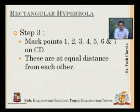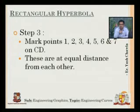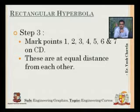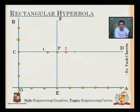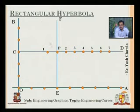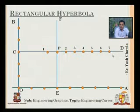Next, step three: I'll mark seven points on CD, the horizontal line passing through point (3,3). I've taken one point on the left-hand side of the point through which the hyperbola is going to pass, and the rest on the right-hand side. I've taken point one on the inside because my hyperbola would be going somewhere here and passing through — that's what a rectangular hyperbola looks like.